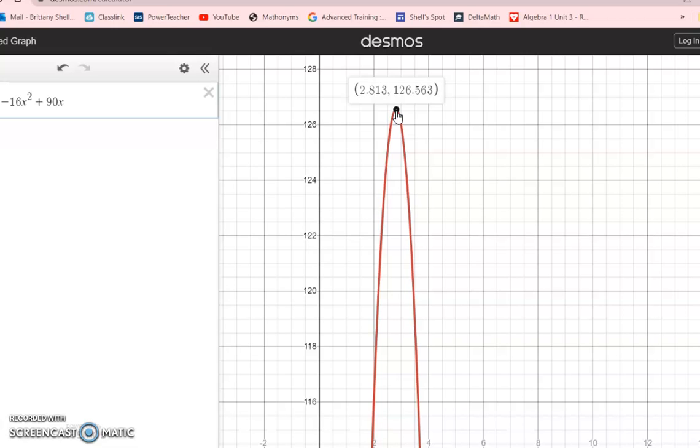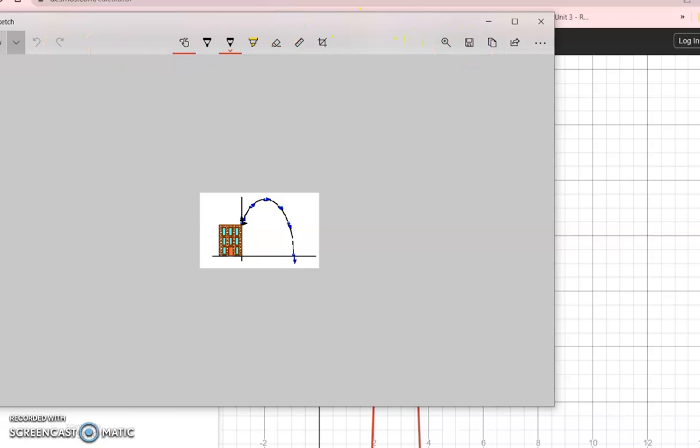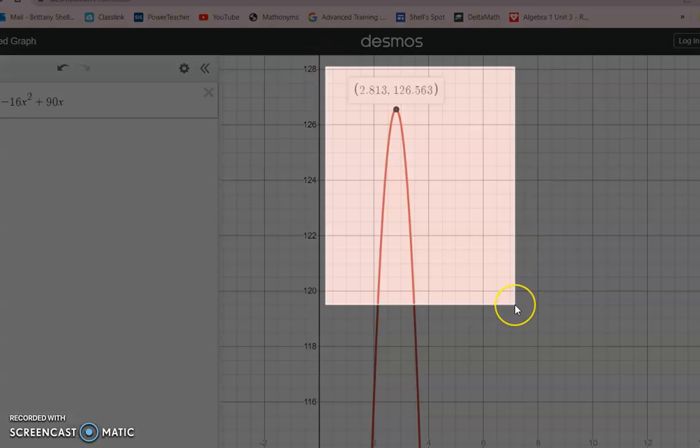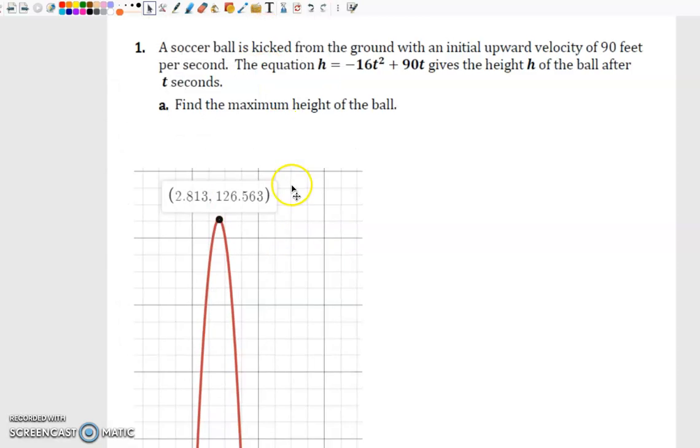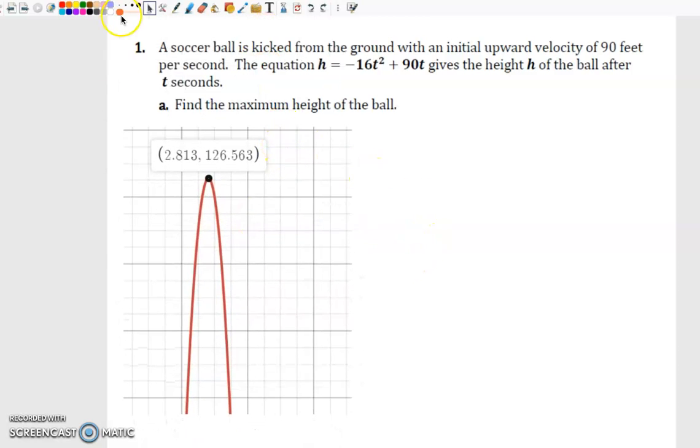In order to find your vertex, if you get close enough, it should give you the gray dot. There it is. Alright, so that is the maximum height would be your y value. Remember in an ordered pair you have x comma y, so our height, the maximum height is 126.563 and this is given to you in feet. So let's take a little quick screenshot there. We're going to copy and paste that back over here.